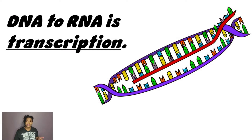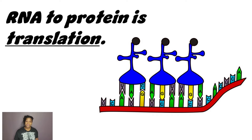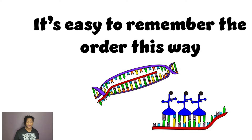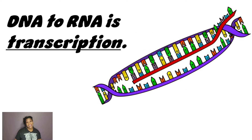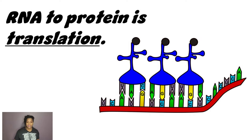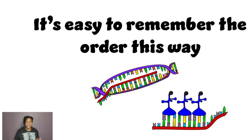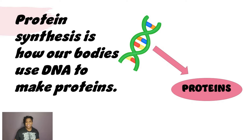DNA to RNA is transcription. RNA to protein is translation. See a trust field comes in for the L and translate — it says it'll remember the order this way.